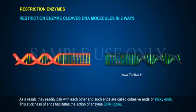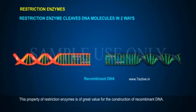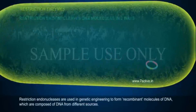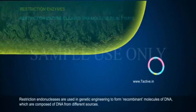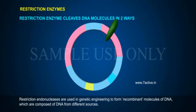This stickiness of ends facilitates the action of the enzyme DNA ligase. When cut by the same restriction enzyme, the resultant DNA fragments have the same kind of sticky ends, and these can be joined together by using DNA ligases. This property of restriction enzymes is of great value for the construction of recombinant DNA. Restriction endonucleases are used in genetic engineering to form recombinant molecules of DNA, which are composed of DNA from different sources.